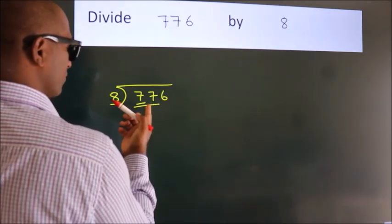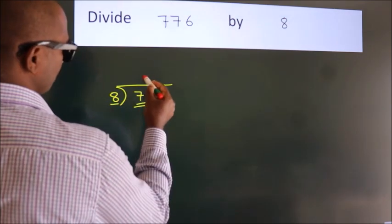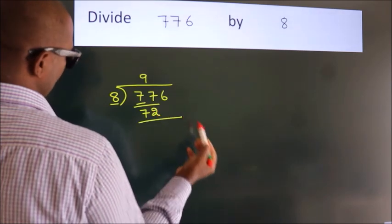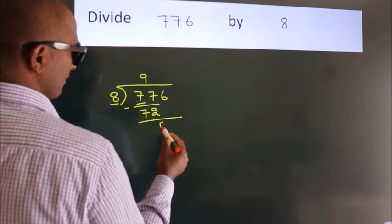A number close to 77 in 8 table is 8 nines 72. Now, we should subtract. We get 5.